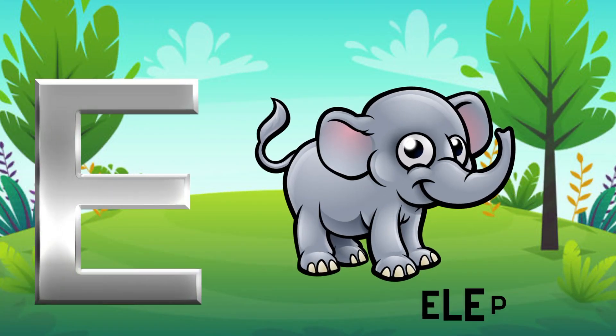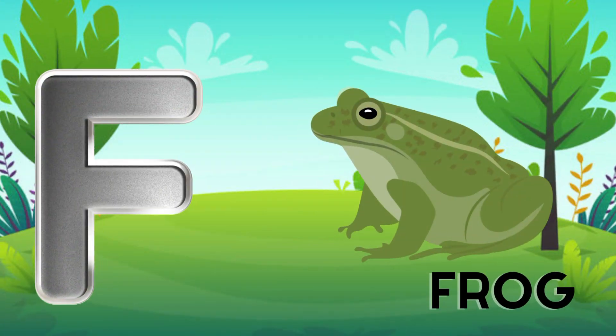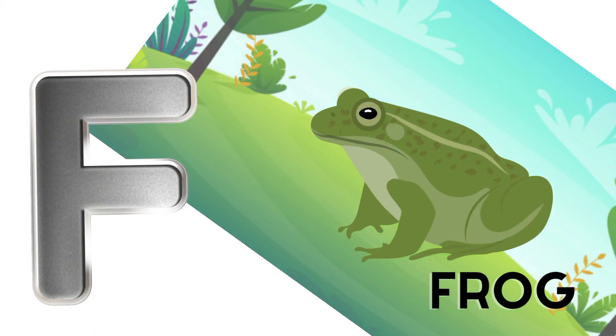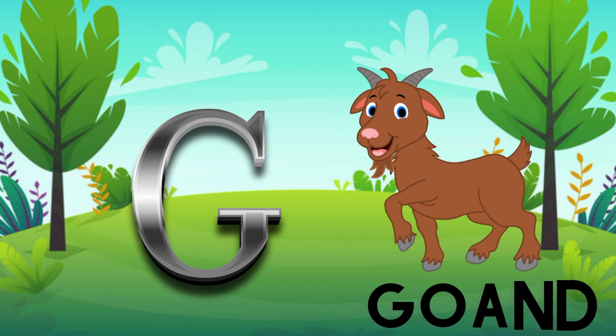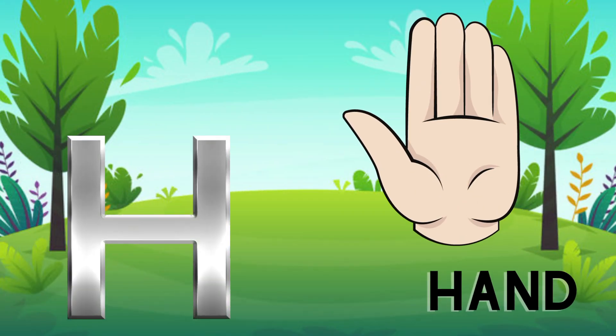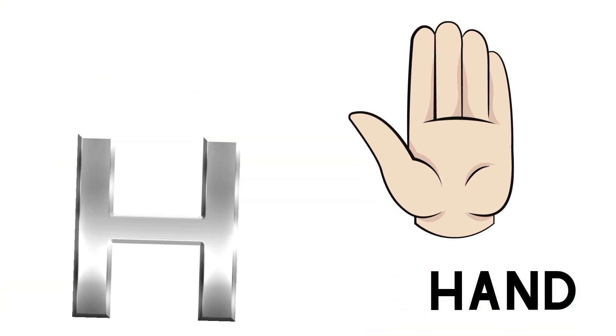E is for elephant, e-e-elephant. F is for frog, f-f-frog. G is for goat, g-g-goat. H is for hand, h-h-hand.